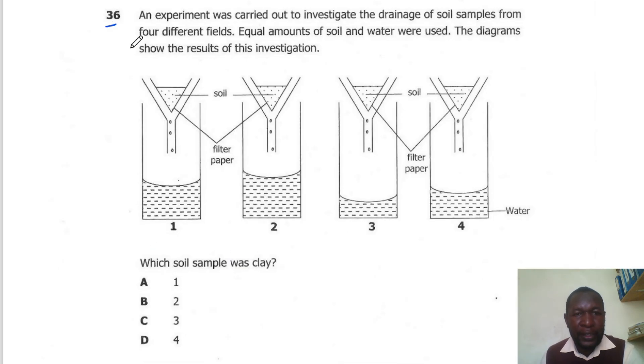Question 36. An experiment was carried out to investigate the drainage of soil samples from four different fields. Equal amounts of water and soil were used. The diagrams show the results of this investigation. Which soil sample is clay? Clay will retain a lot of water. Here we have sample 3 which only allowed a little amount to pass through, meaning the soil retained the water. So the correct answer here is C.